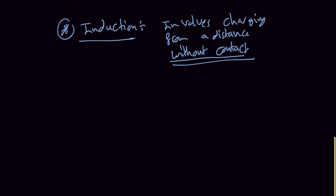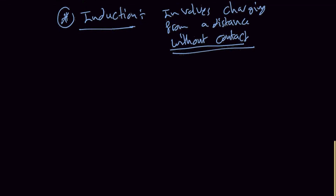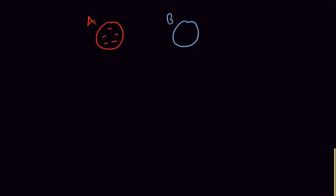So with conduction we have contact between the objects, but with induction we're not going to have any contact whatsoever. Let's replay the previous example: we have charge A with negative charges and charge B which is completely neutral. What I'm going to do is bring object A close to B, but they are not going to be in contact with each other — they will be within a close distance.